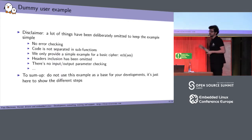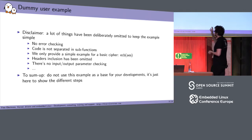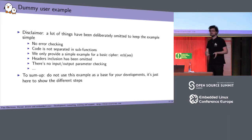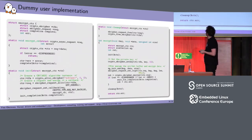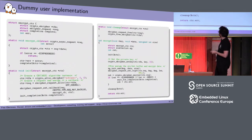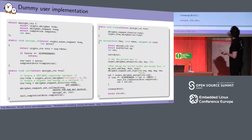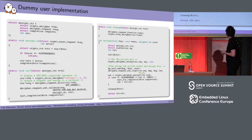Let's look at a real code example showing all the different steps. Note that this code is not meant for real production use — it's just to illustrate the steps. Looking at the encrypt function on the right side of the screen, this function is supposed to encrypt some data. You pass it the private key you want to use, the data you want to encrypt — which serves as both input and output buffer — and you pass the size.